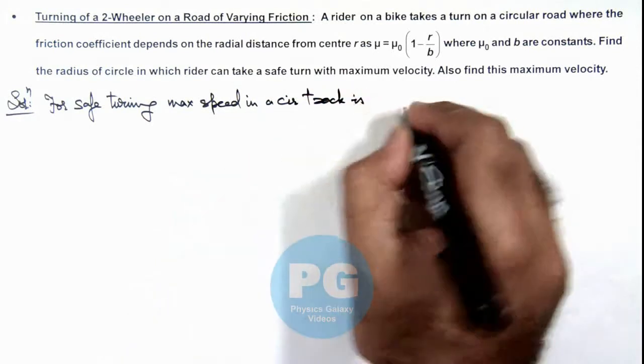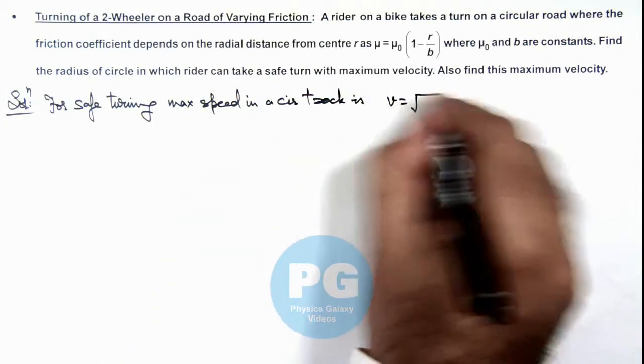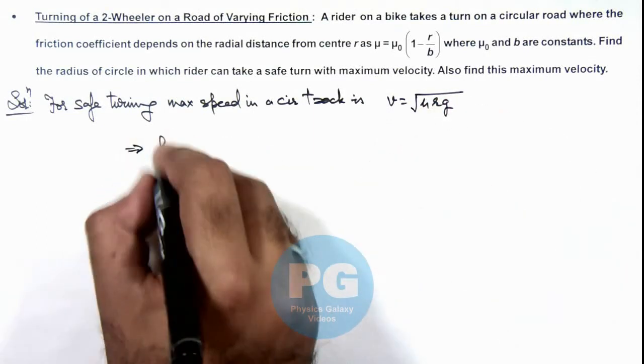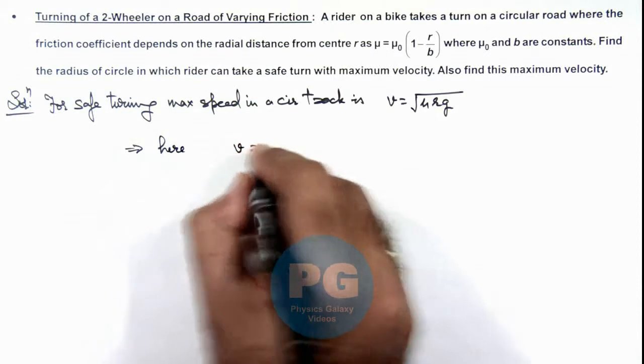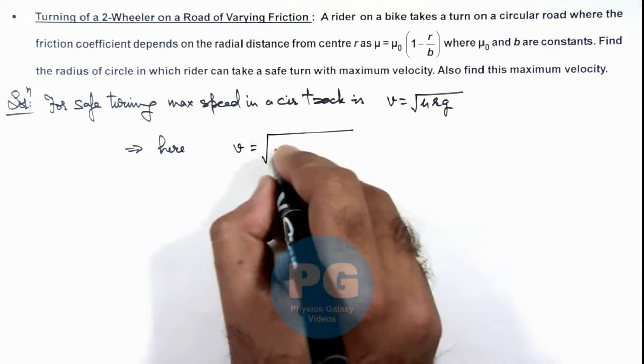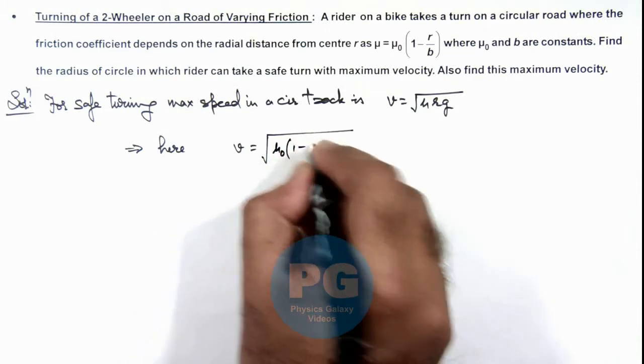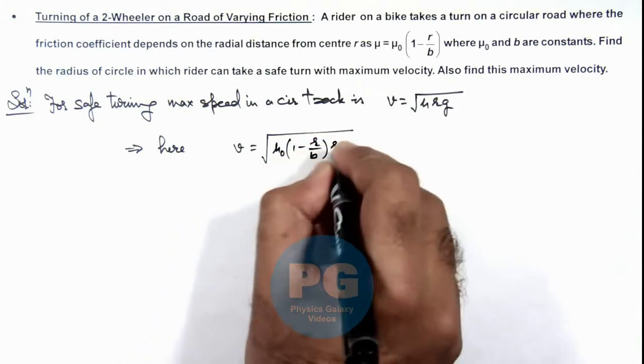is given as √(μrg), that we already studied. This implies that here, this maximum speed will be √[μ₀(1 - r/b)rg].